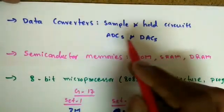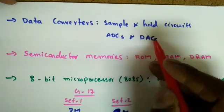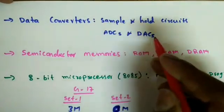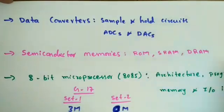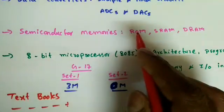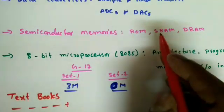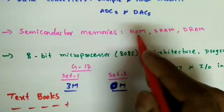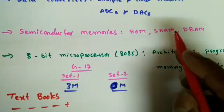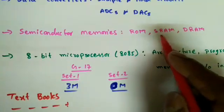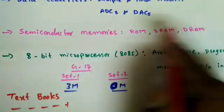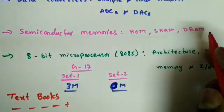The next concept is data converters — analog-to-digital converters (ADCs) and digital-to-analog converters (DACs) — and the different types available. After that, we cover semiconductor memories, including ROM and RAM, their architectures, and different types of RAM such as static RAM and dynamic RAM, which are important in current VLSI trends.